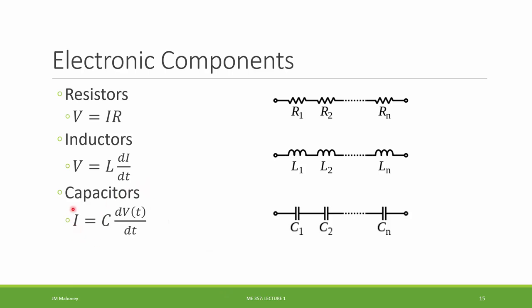The current across the capacitor is going to be the capacitance C times the time derivative of the voltage going across the capacitor. So see how inductors and capacitors have this kind of opposite relationship here.